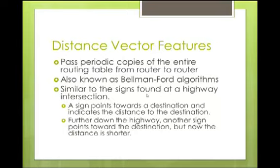Distance vector passes periodic copies of the entire routing table from one router to the next — they take their routing table, package it up, and send it to the other router. From that information, they can build the routing table and converge. This is also known as the Bellman-Ford algorithm. It's similar to signs found at a highway intersection. A sign points towards the destination and indicates the distance. For example, driving from Bismarck to Fargo, when you first leave Bismarck it says Fargo 189 miles. When you get to Jamestown, it says Fargo roughly 100 miles. As that mileage gets lower, we know we're going in the correct direction — that's how distance vector works.